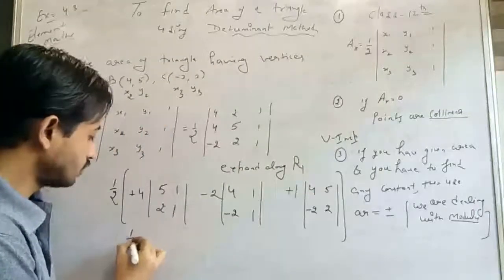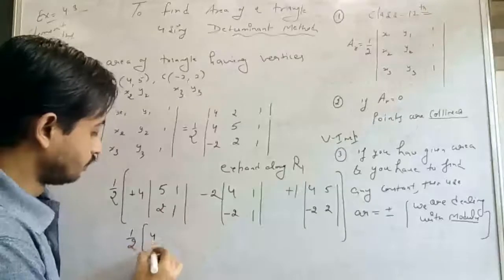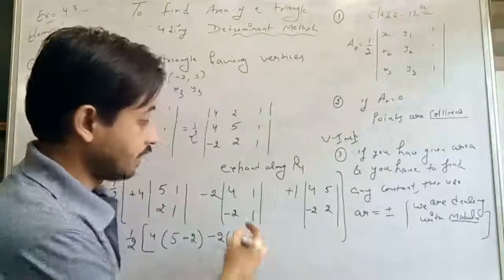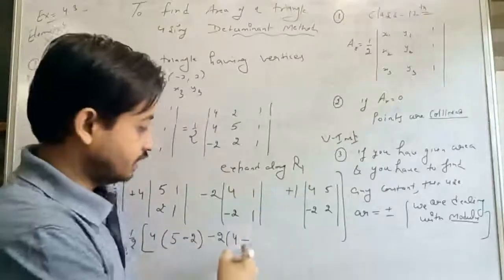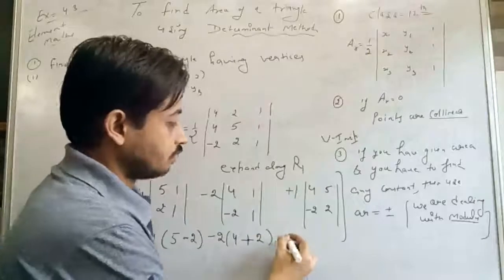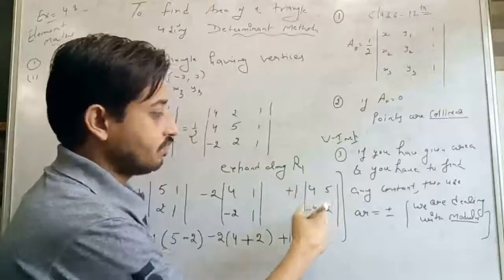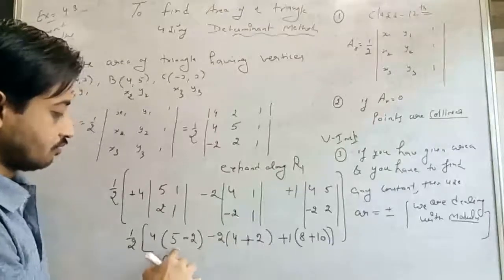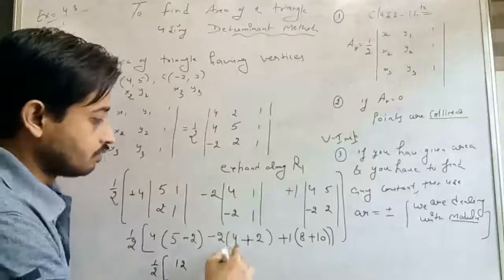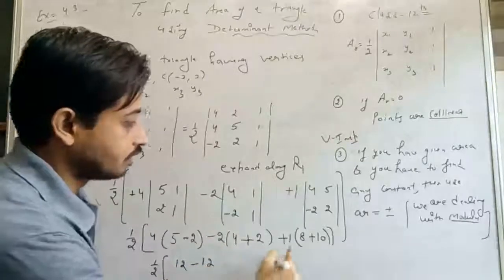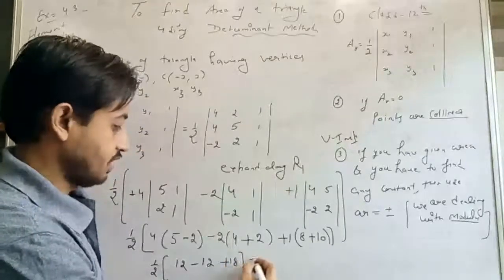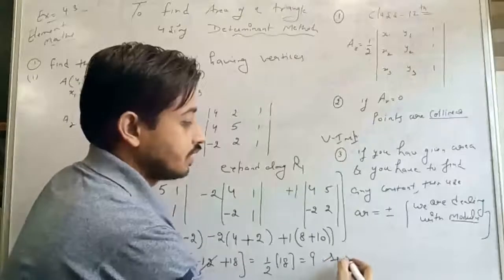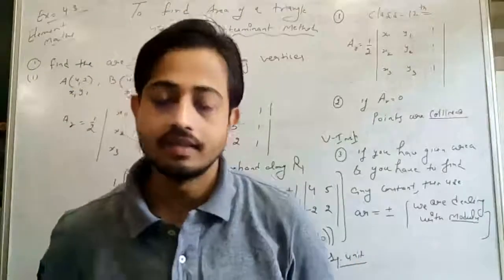Solving further: 12 − 12 + 18 = 18. Then multiply by (1/2): area = (1/2) × 18 = 9. So the answer is 9 square units. This is your final answer. I hope you understand this concept — please make a note first.